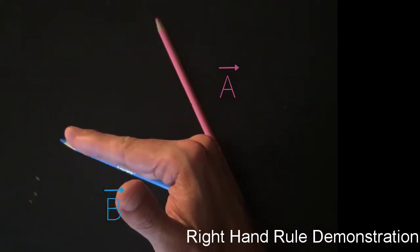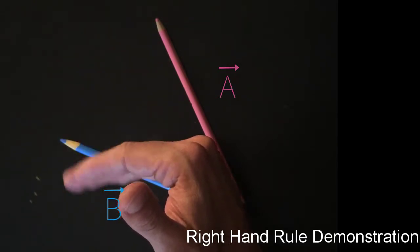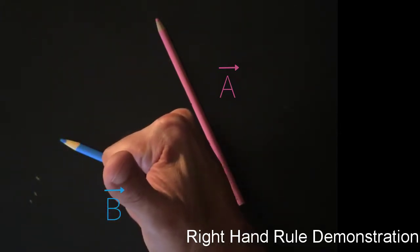Then my thumb points in the direction of the resulting vector perpendicular to those two vectors, which in this case is out of the screen or out of the surface.